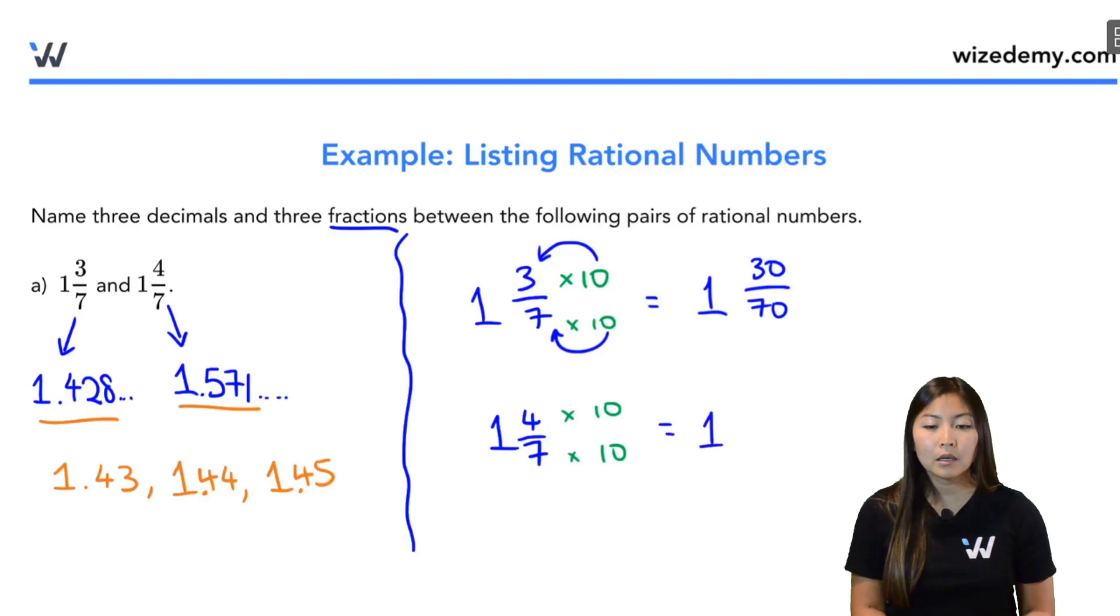Same thing with the second rational number, 1 and 40 over 70. Now it's much easier for us to see what fractions are between these two numbers. So 30 out of 70, 40 out of 70, well a fraction that's between them is 31 out of 70, 32 out of 70, 33 out of 70 and so on.